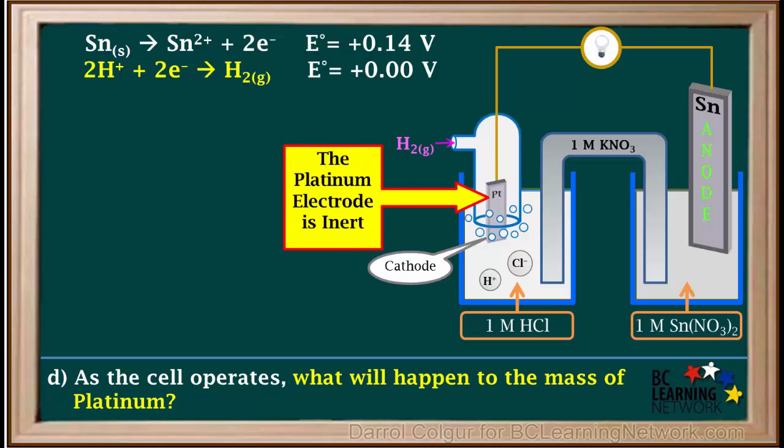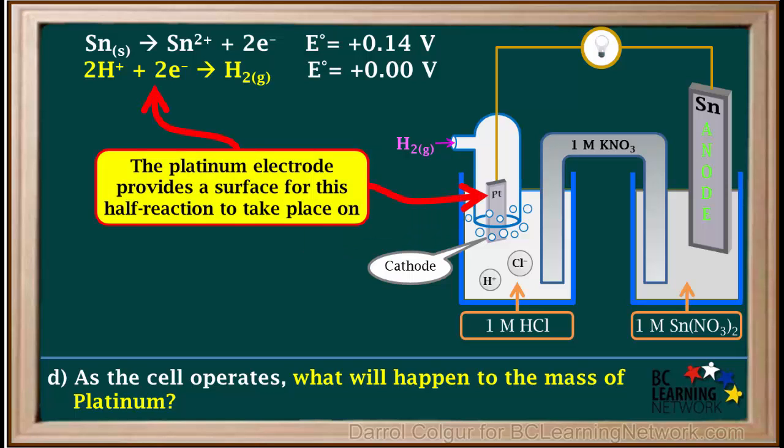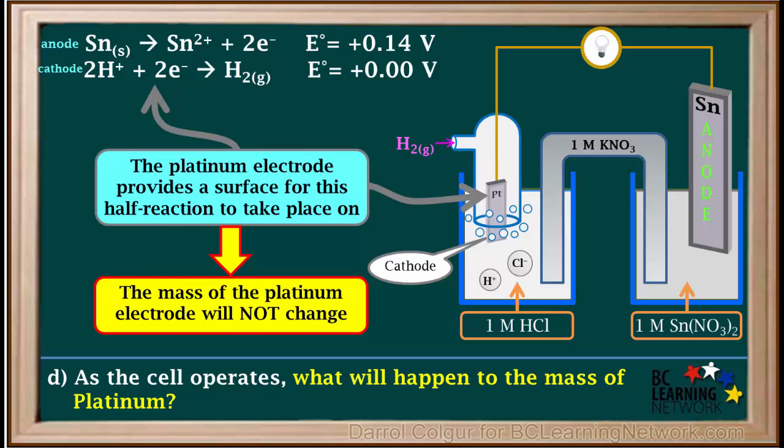The platinum electrode itself is inert. It doesn't undergo any reaction. It simply provides a solid surface for this reaction to take place on. So as the cell operates, the mass of the platinum electrode will not change in any way.